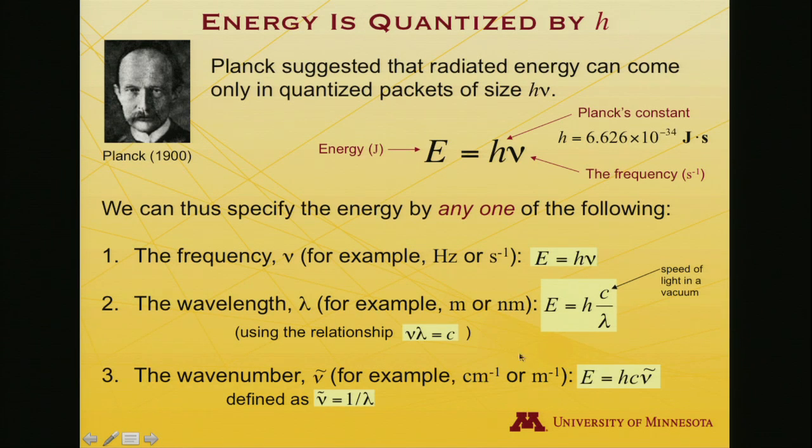And then finally, because people found it a little inconvenient to divide by wavelength, division always seems harder than multiplication, I guess, there is another quantity. It's called the wave number. So the wave number is just 1 over the wavelength. So it's in units of reciprocal length. It could be reciprocal centimeters, reciprocal meters...